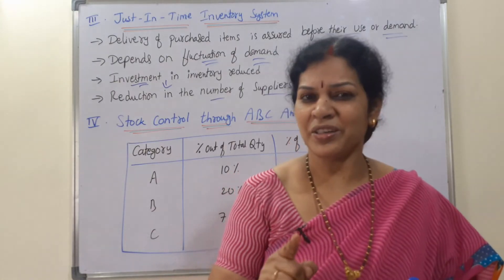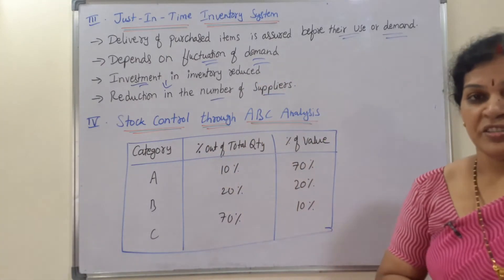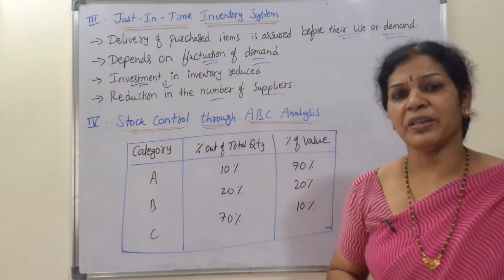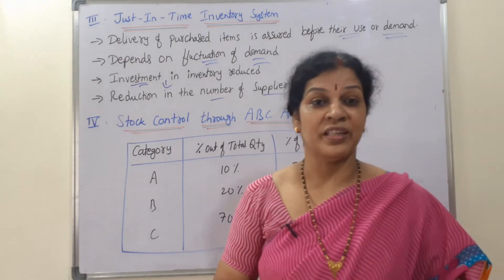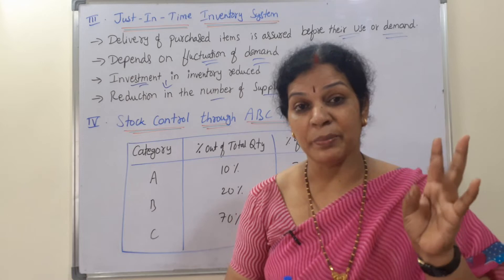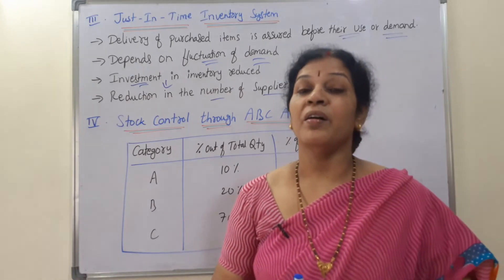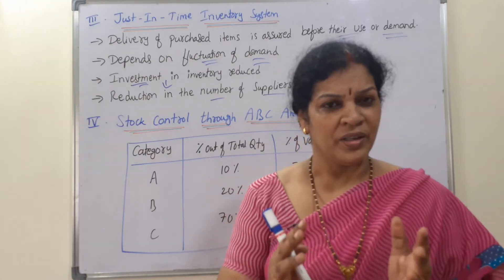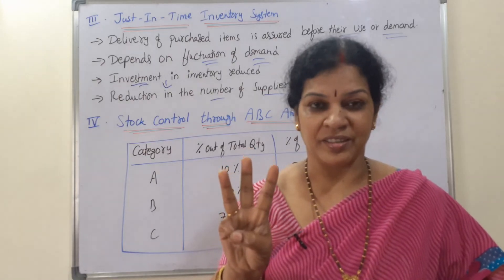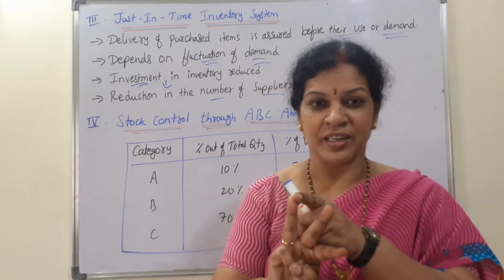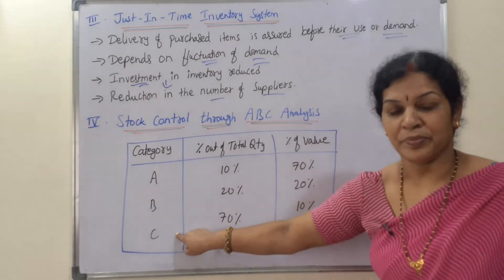The fourth method of stock control is through ABC Analysis. Through ABC analysis, we can control stock. In other words, ABC stands for 'Always Better Control.' In this ABC analysis, we divide materials into three categories: A category, B category, and C category.